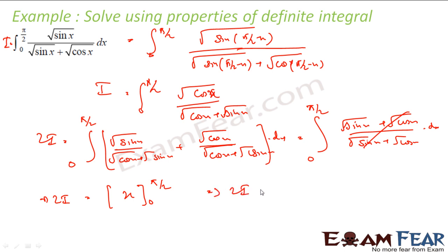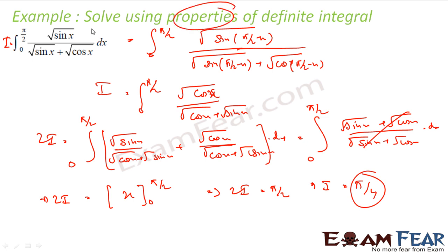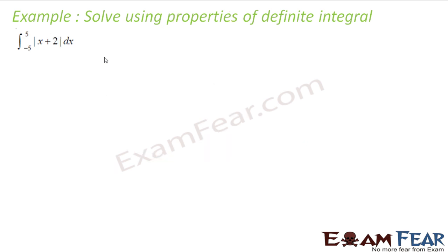So 2I equals π/2, which gives I = π/4. Here also, just by using the properties, we did not actually find the integral of sin x or cos x — just by using the properties we found the value. These kinds of questions you cannot solve without properties, so please pay attention.